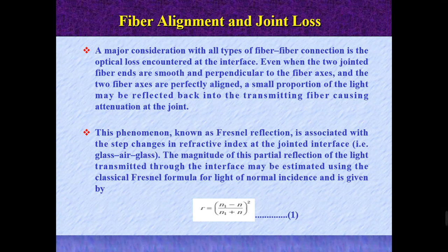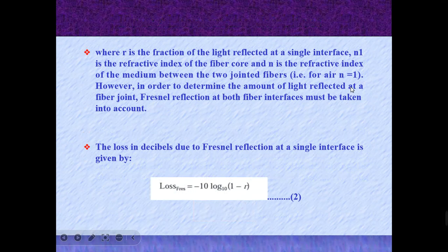The magnitude of this partial reflection of the light transmitted through the interface may be estimated using the classical Fresnel formula for light of normal incidence, given by the equation: R equals (n1 minus n) divided by (n1 plus n), whole squared. Here, R is the fraction of the light reflected at a single interface, n1 is the refractive index of the fiber core, and n is the refractive index of the medium between the two joints — for air, n equals 1.